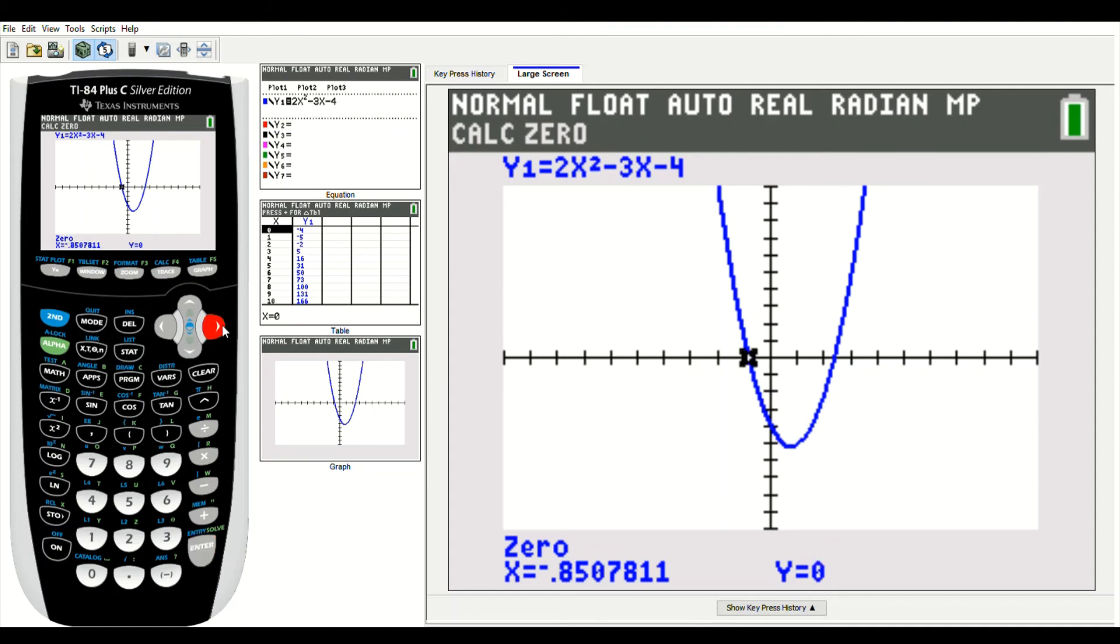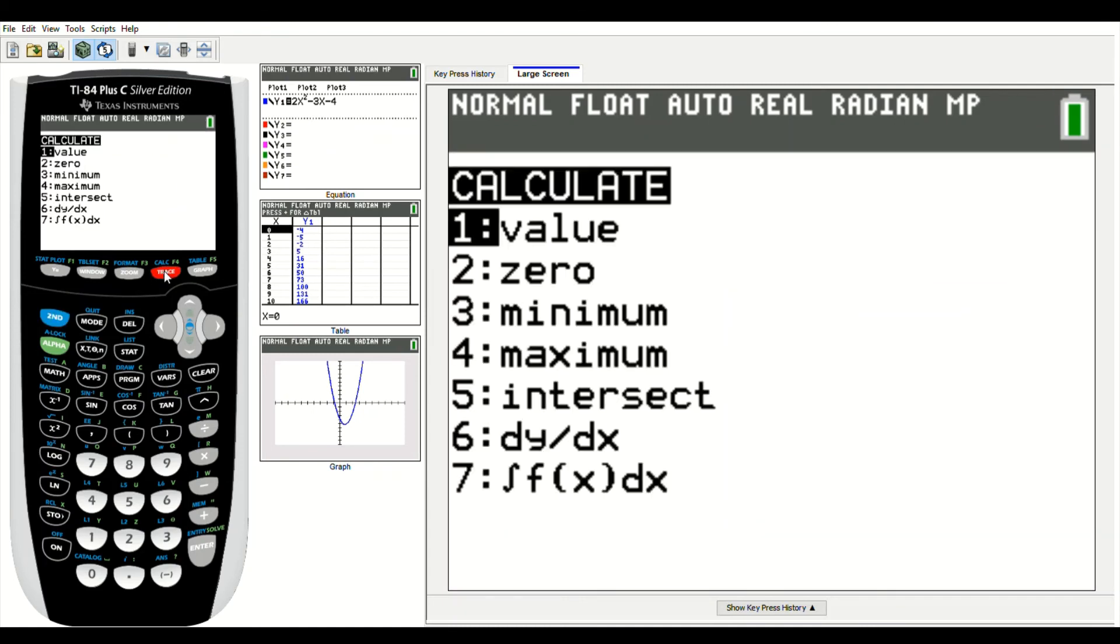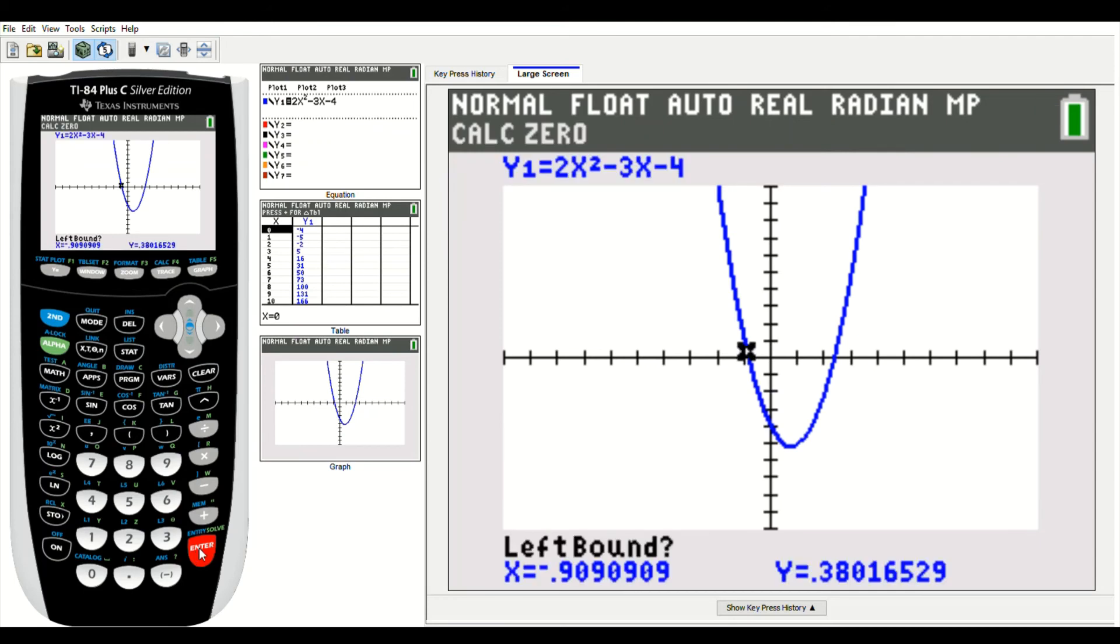So let's calculate the other x-intercept. I need to go to second trace again. I'm going to calculate the zero. So in this example, I'm going to scroll down and then press enter. You can do that, or you can just press the number two.